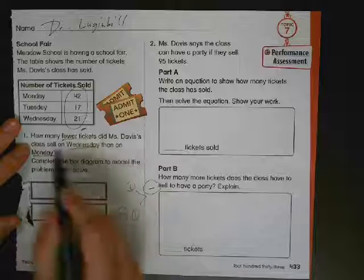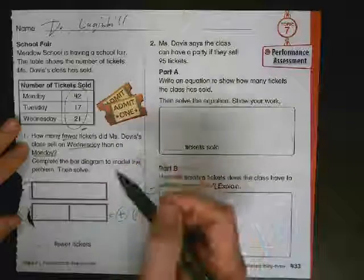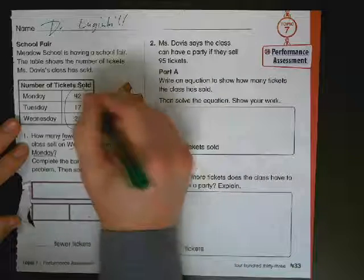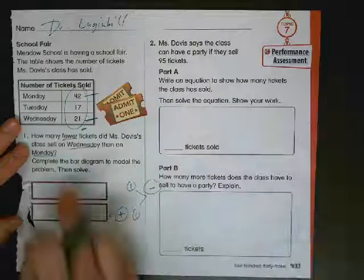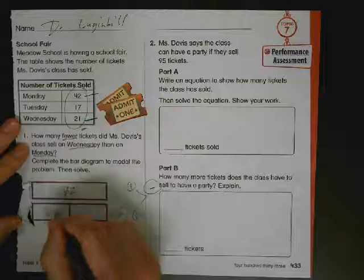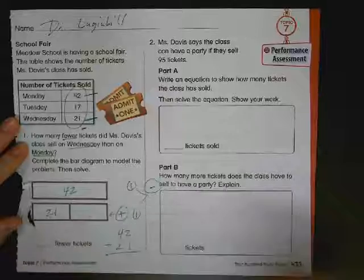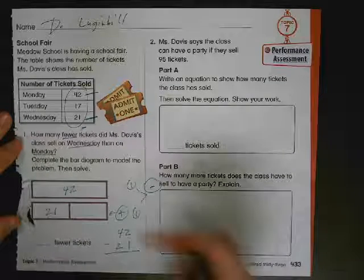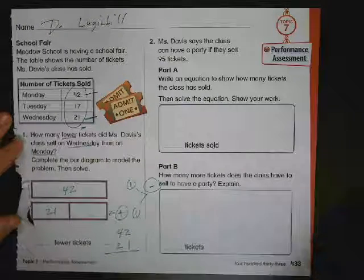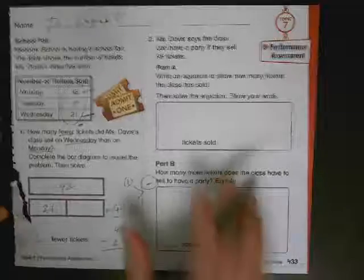It says how many fewer tickets did Mrs. Davis' class sell on Wednesday than Monday? So Wednesday and Monday. Well, Wednesday and Monday is fewer, it's subtraction. So we have to start with the biggest number on top, 42 and 21. Monday and Wednesday. So the big number is going up top, small number is going down below. Now I know I have to do subtraction. So I've got to do 42 minus 21. The nice part about that is subtract down the columns. You don't have to regroup. Great. I would pause the video, fill this in, fill this in, subtract it, and write the answer. I ripped the paper, sorry about that.